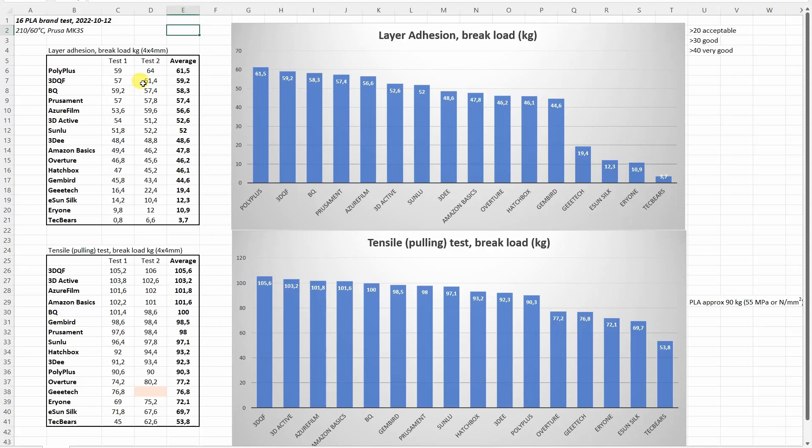Now let's analyze the results in this Excel table which is downloadable from mytechfun.com website. Let's start with the layer adhesion. Here we can see the average of two tests and I sort them from the strongest to the weakest.